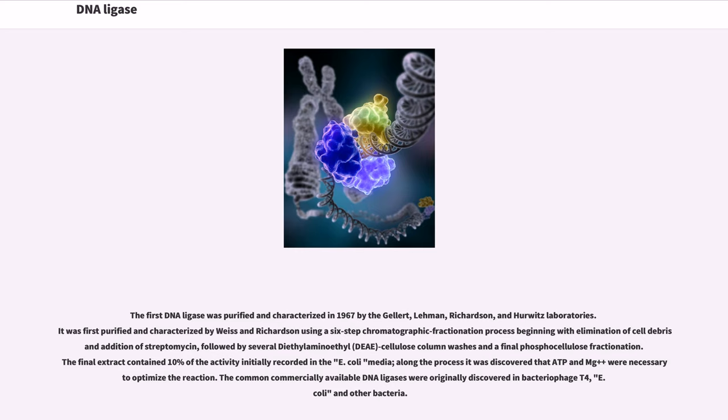The first DNA ligase was purified and characterized in 1967 by the Gellert, Lehman, Richardson, and Hurwitz laboratories. It was first purified and characterized by Weiss and Richardson using a six-step chromatographic fractionation process beginning with elimination of cell debris and addition of streptomycin, followed by several diethylaminoethyl DEAE cellulose column washes and a final phosphocellulose fractionation. The final extract contained 10% of the activity initially recorded in the E. coli media, and along the process it was discovered that ATP and Mg++ were necessary to optimize the reaction.